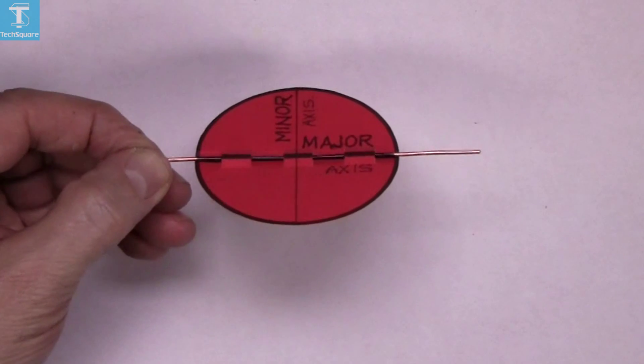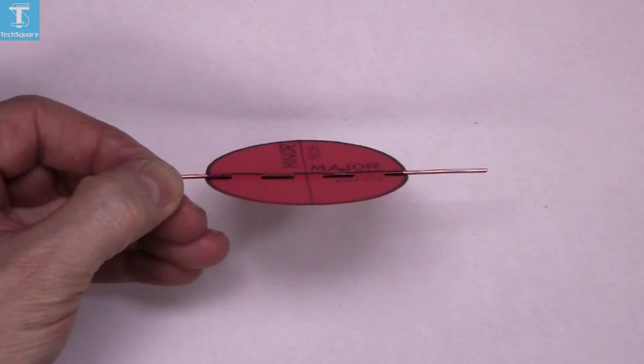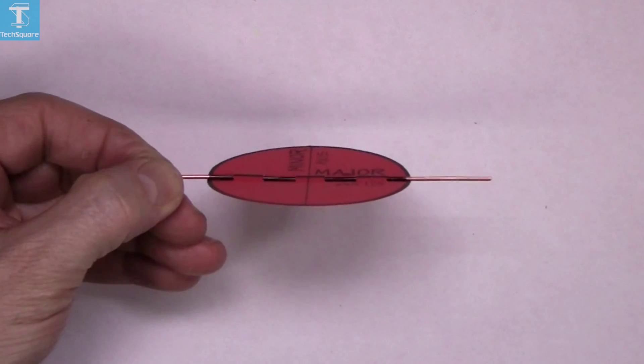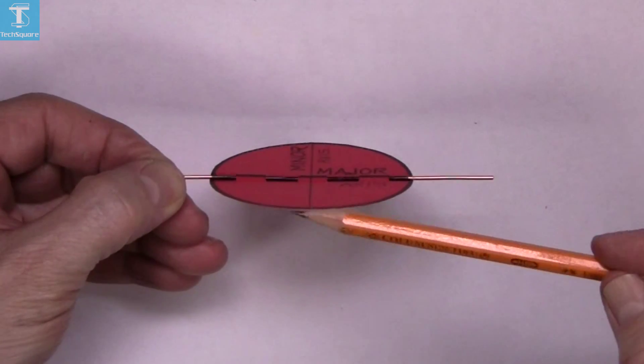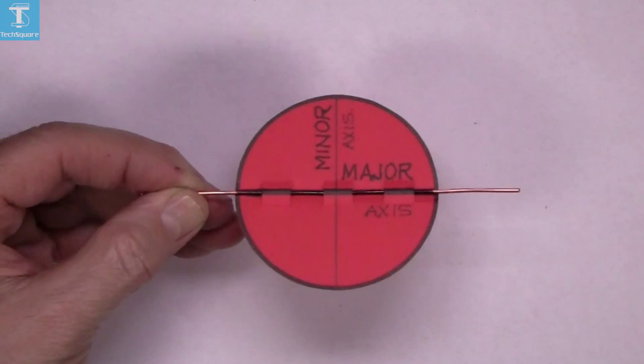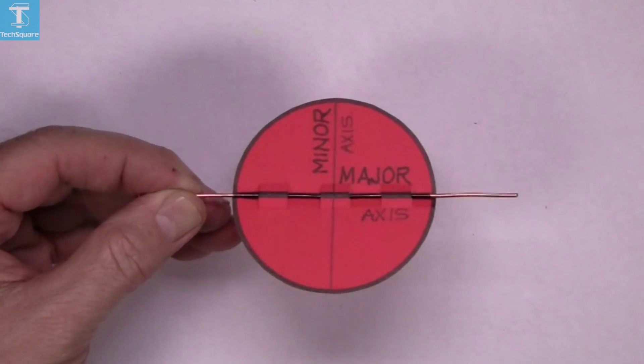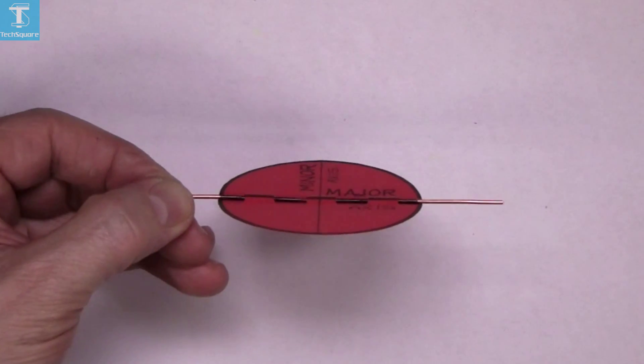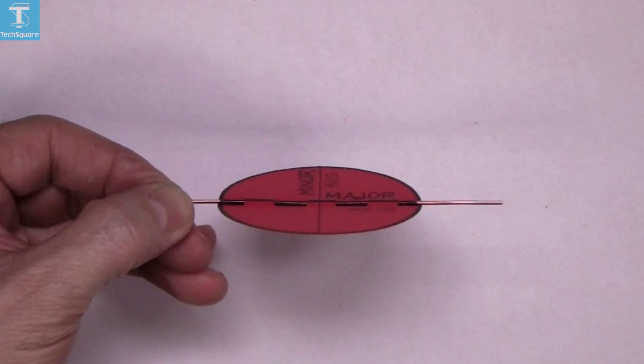In other words, if I rotate this circle around, then its shape changes. This shape now is an ellipse. It was a circle in that position there, but now it's an ellipse when it's rotated like that.